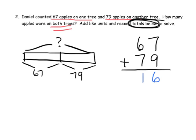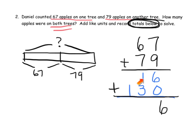Thirteen tens — so that's one hundred thirty. And now we can add those together: six plus zero gives us six; one ten plus three tens gives us four tens; no hundreds plus one hundred gives us one hundred. So our answer is one hundred forty-six apples.